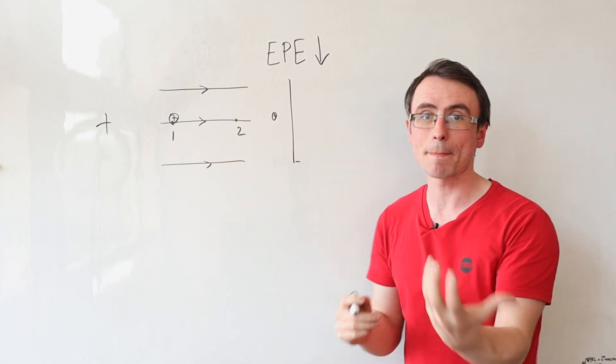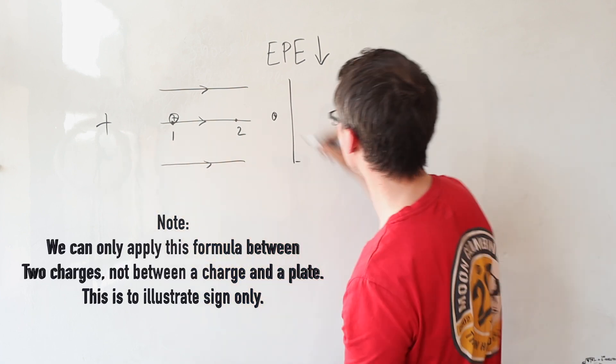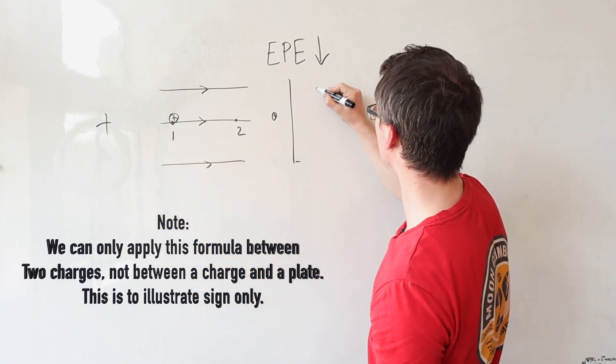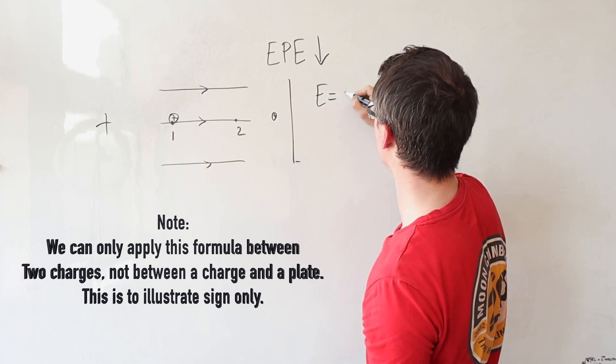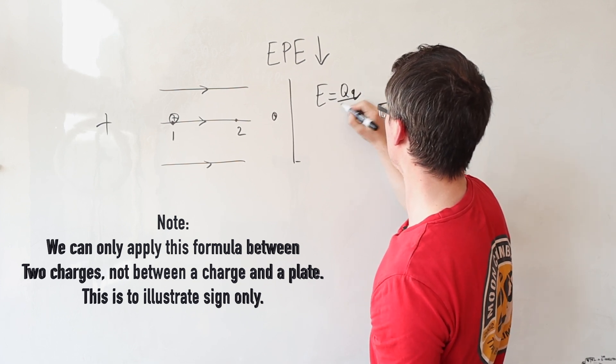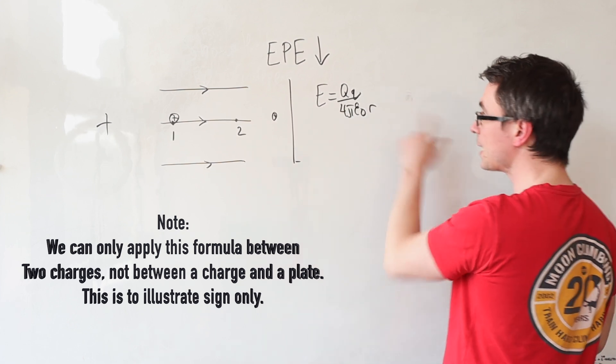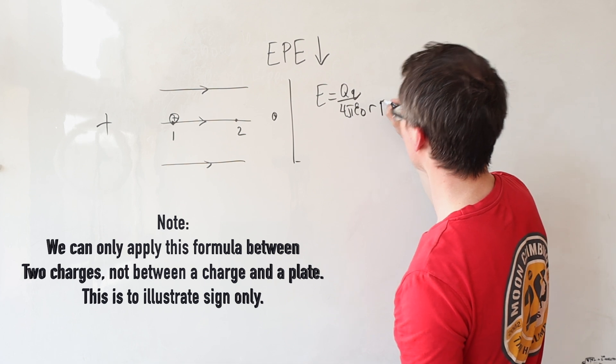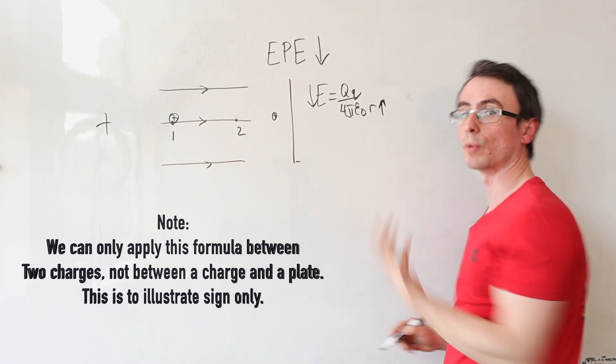We may have to think about this mathematically as well. The electric potential energy in this case between those two will be positive, so we can say that the energy, let's call it qq over four pi epsilon not r, will be decreasing because as r increases, well this positive quantity will be decreasing.